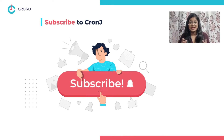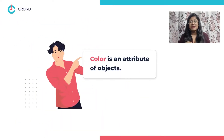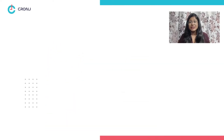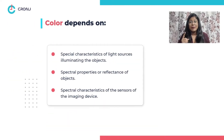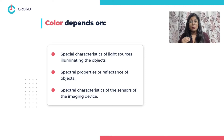Now let's get started. So what is color in the first place? Color refers to an attribute of an object which depends upon: number one, special characteristics of light sources illuminating the object — for example, the sun or a lamp; number two, spectral properties or reflectance of objects; and number three, spectral characteristics of the sensors of the imaging devices — for example, the eye or a DSLR camera.